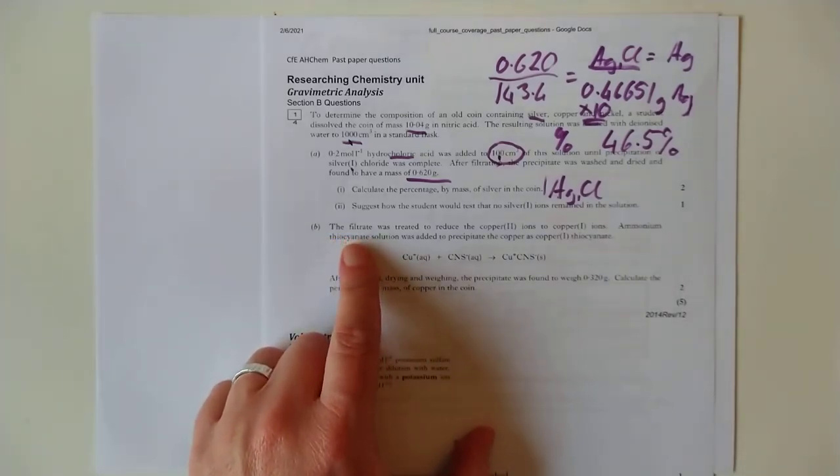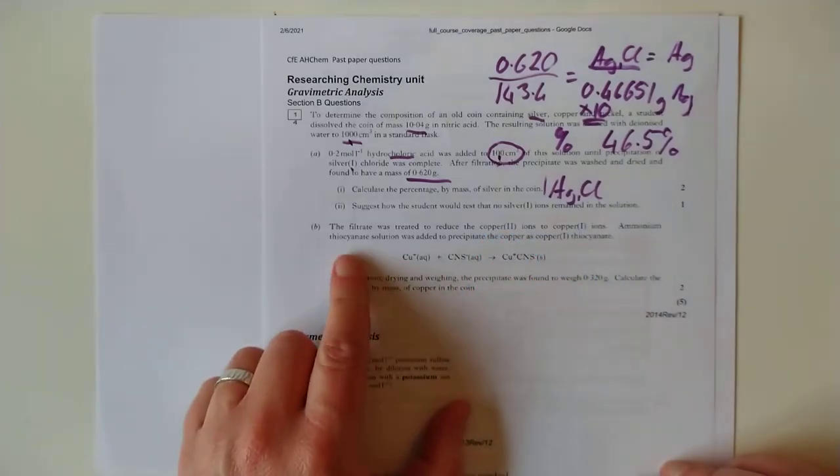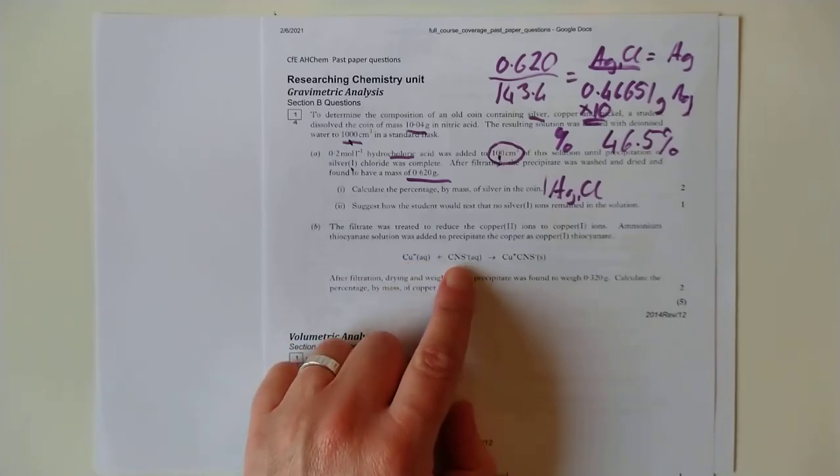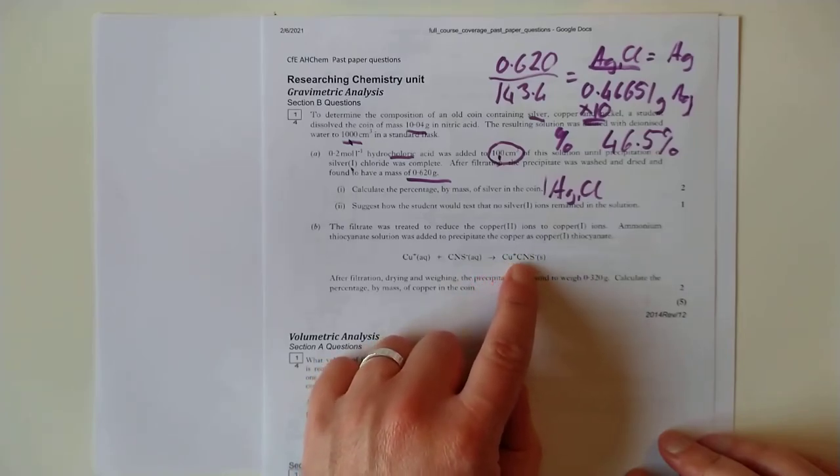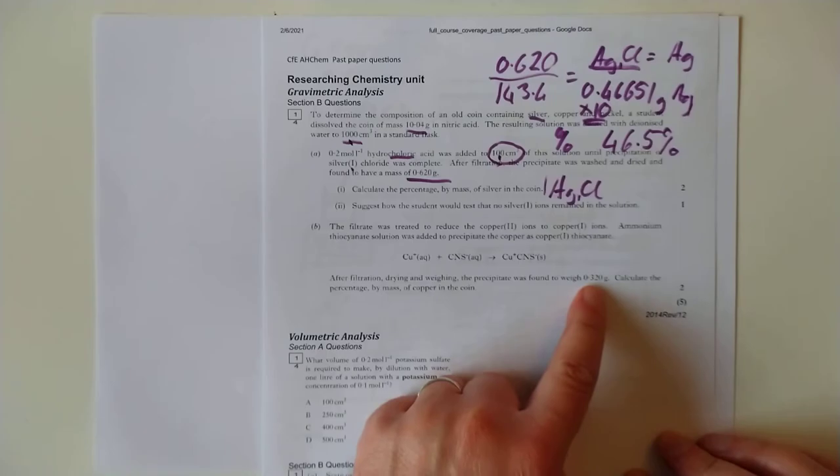The filtrate was treated to reduce the copper 2 ions in the coined copper 1 ions. Then the precipitate of the copper 1 was done by adding the thiocyanate solution here.